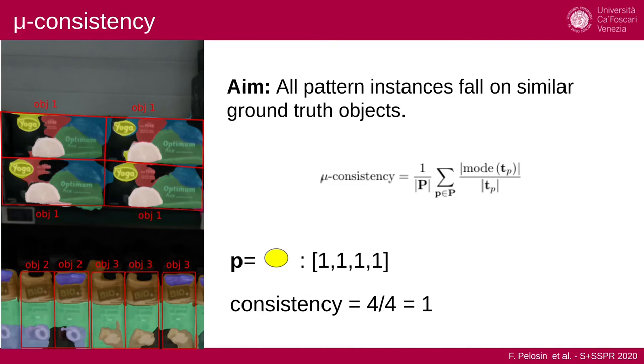We also had to introduce, in order to assess the goodness of our algorithm, a new measure called mu-consistency. The aim is that we want to assess the fact that all the pattern instances should fall on similar ground truth objects.